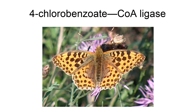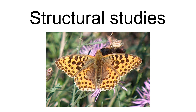It employs one cofactor, magnesium. As of late 2007, two structures have been solved for this class of enzymes, with PDB accession codes 1T5D and 1T5H.